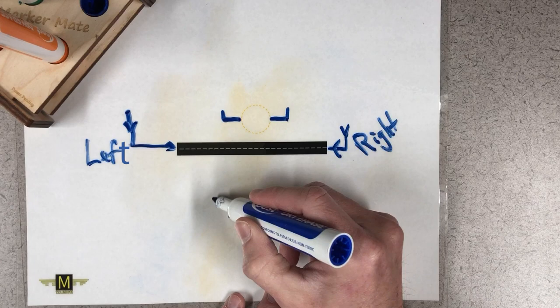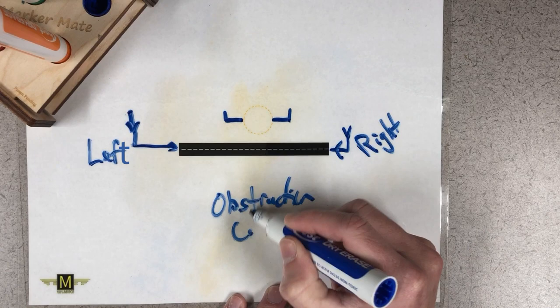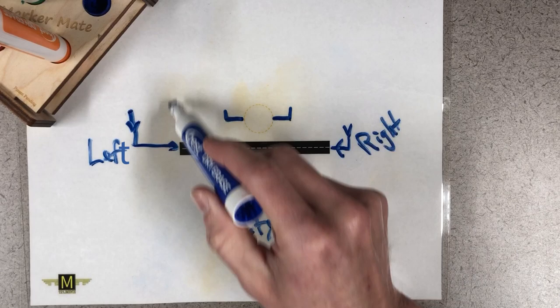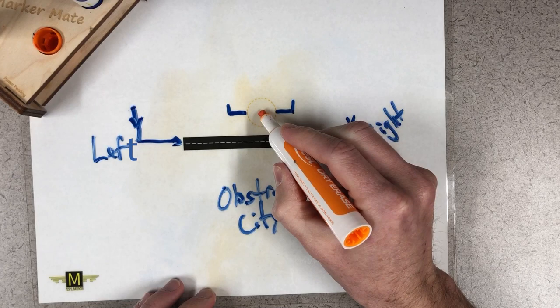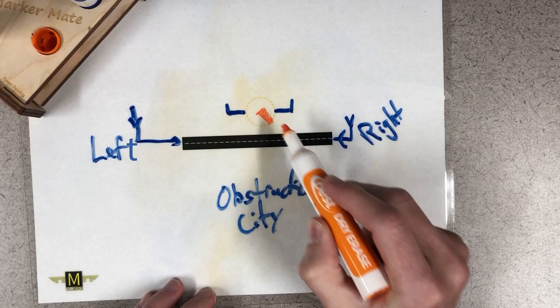Maybe over here there's an obstruction or maybe some sort of a city that doesn't like you flying over it. So the traffic goes right-hand one way and left-hand the other way, depending on which direction you're coming from. That's why it's vitally important that you read the windsock. The tail of the windsock points towards your final approach course.